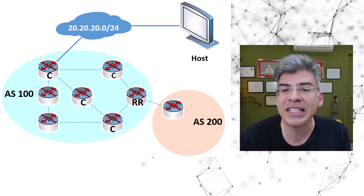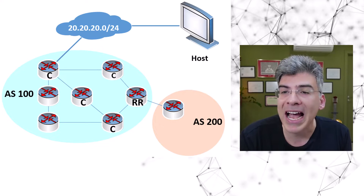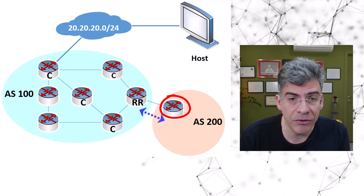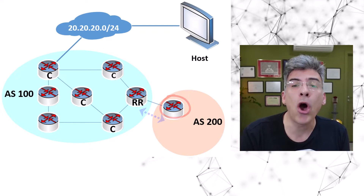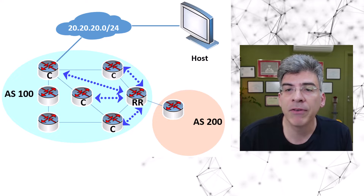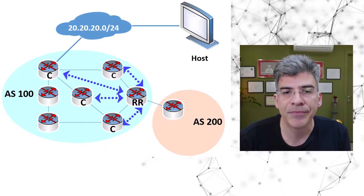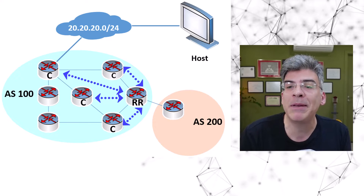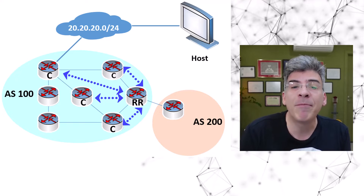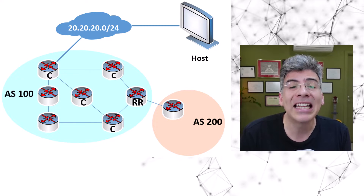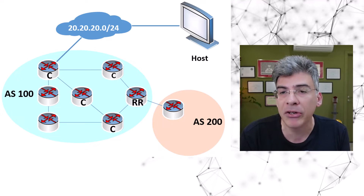In the topology we see here, the RR has a single EBGP peering with a router in AS 200. Within its home AS of 100, we see four client routers, so there are four peerings from the RR to each of the client routers. For the RR and the RR clients, the full mesh IBGP peering requirement does not apply. We have bypassed this requirement and each client needs only to create a peering with the route reflector. By definition, client routers must not have IBGP peerings between them.